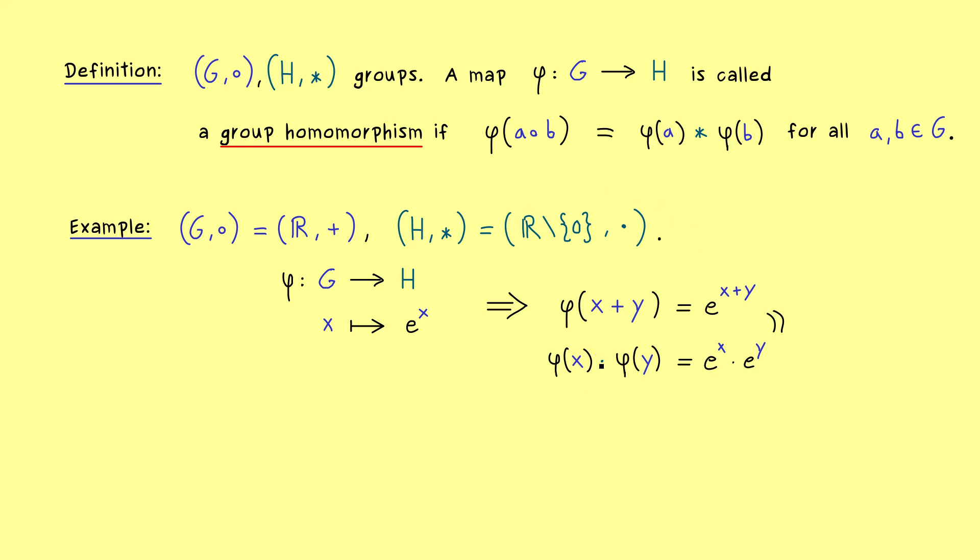Moreover, here you see something crucial as well. A group homomorphism does not have to be surjective at all. So you don't have to hit all the group elements on the right hand side. However, as we have already discussed before, if we hit an element in H, we also have to hit the inverse.